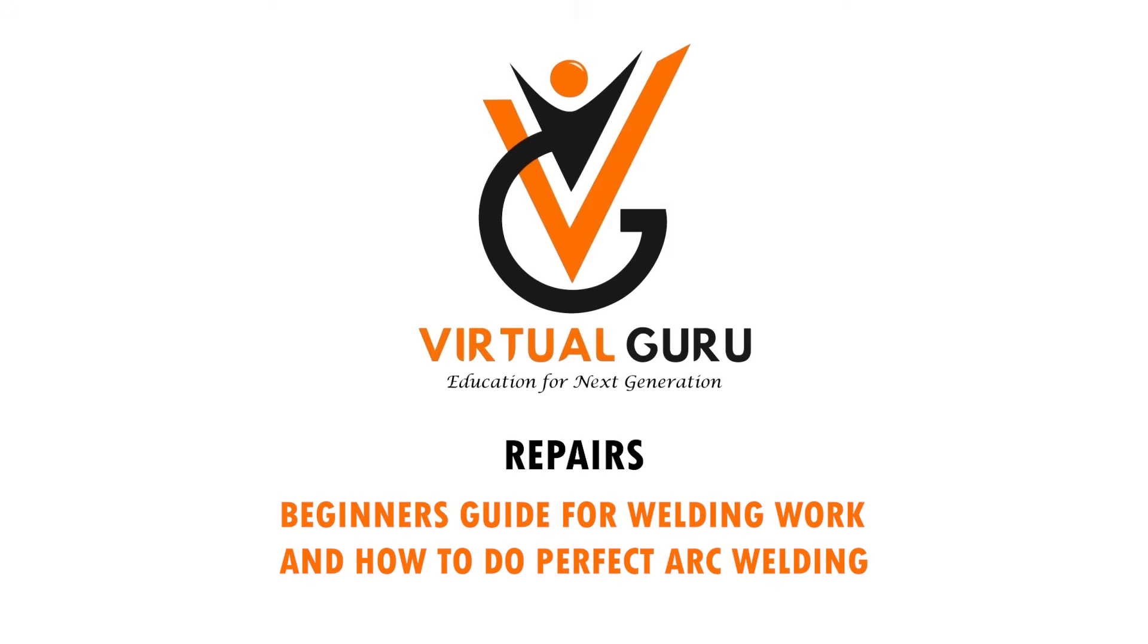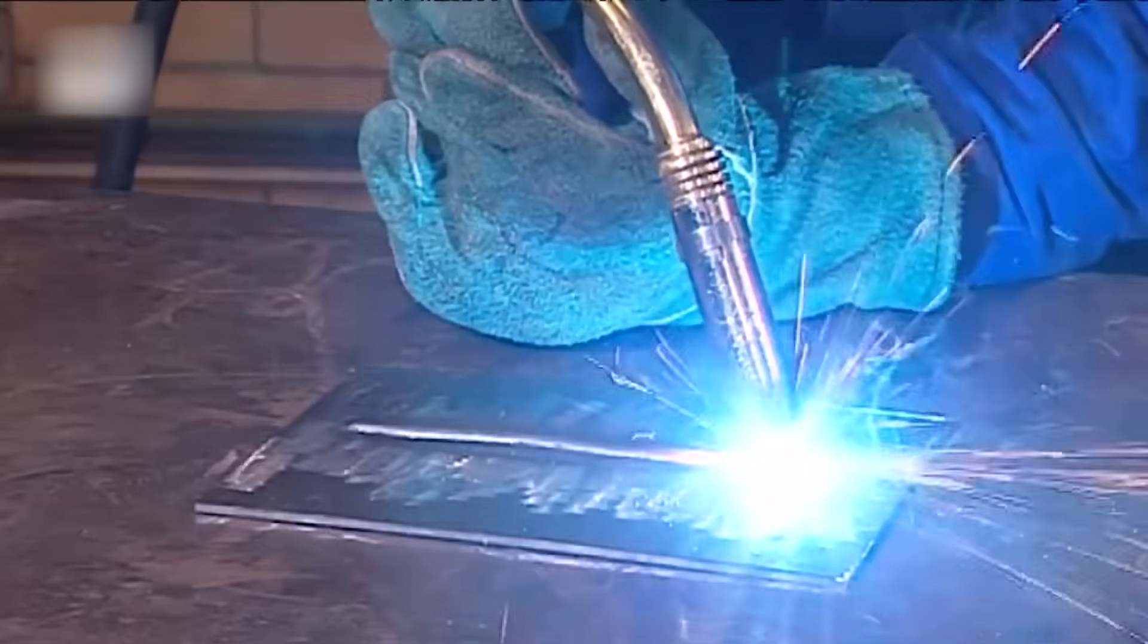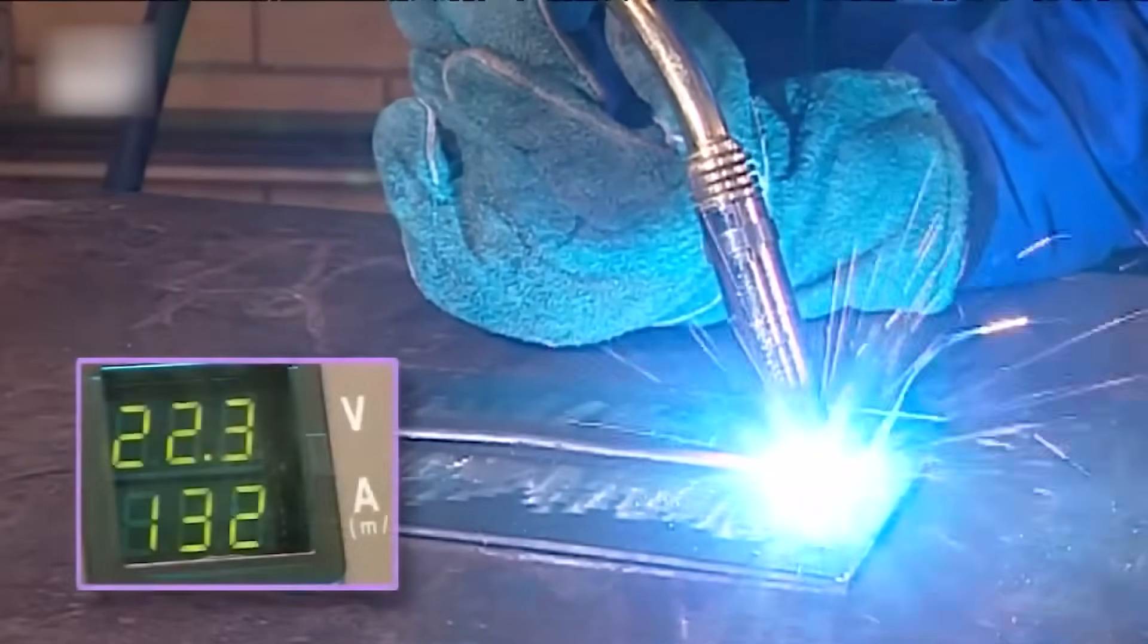Beginner's Guide for Welding Work and How to Do Perfect Arc Welding. Arc welding is a process that uses an electric arc to join the metals being welded.